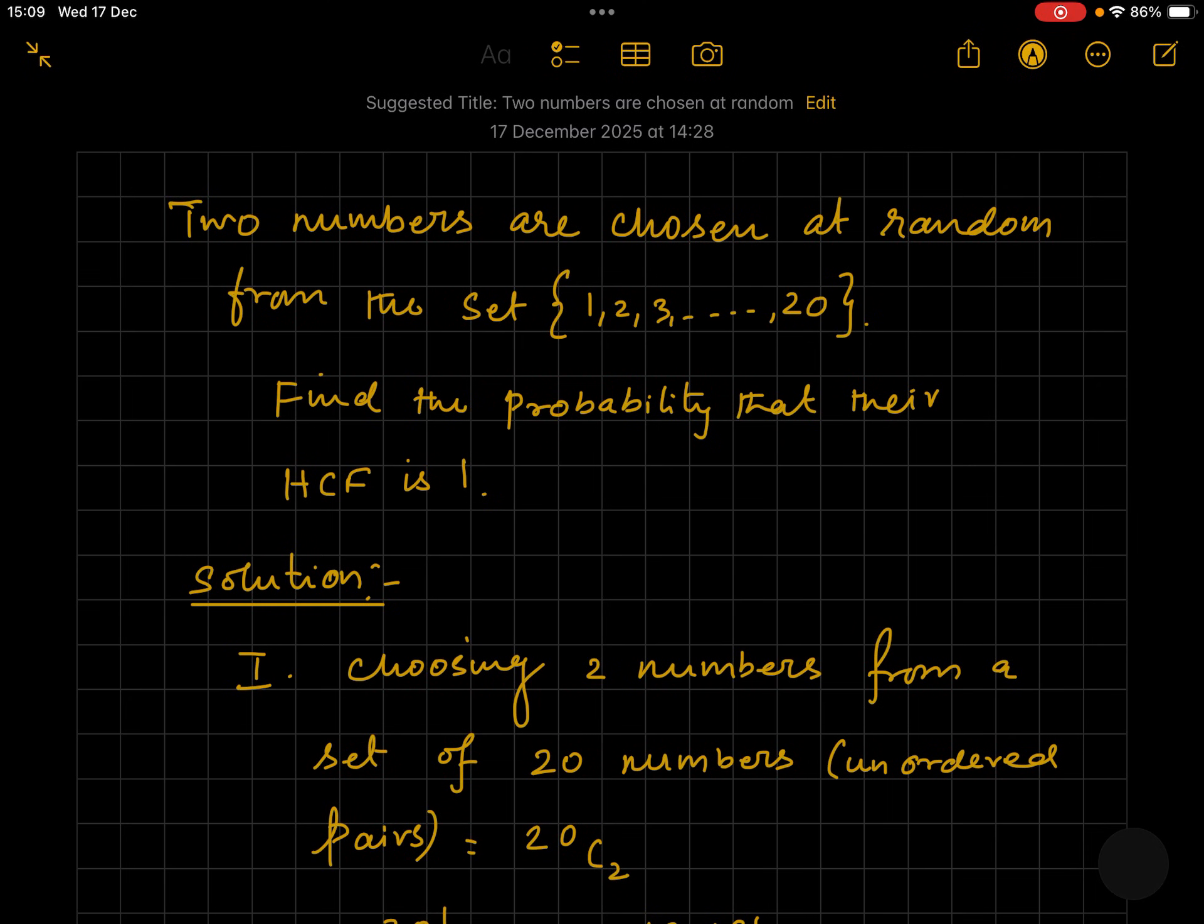Hi, hello and welcome students. In today's video, we will be solving a question on probability. The question says: two numbers are chosen at random from the set 1, 2, 3 up to 20. Find the probability that their HCF is 1.